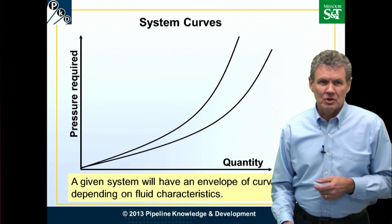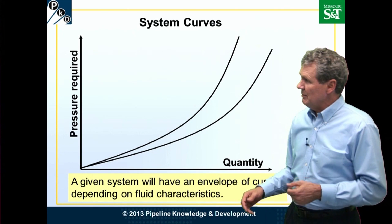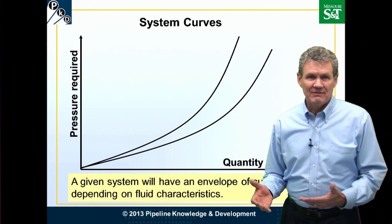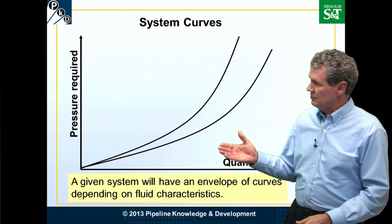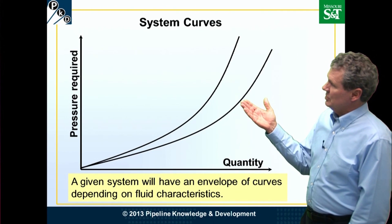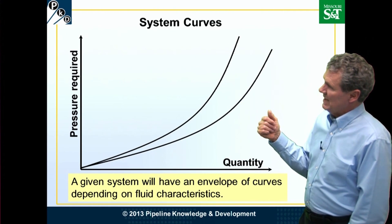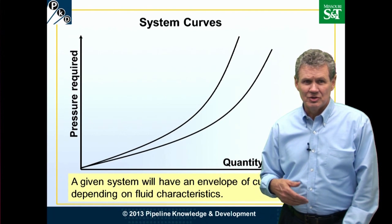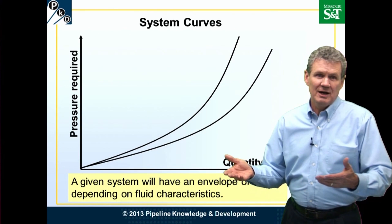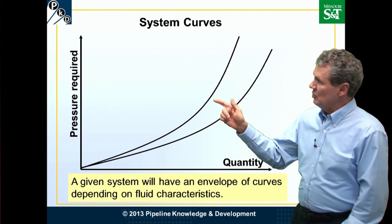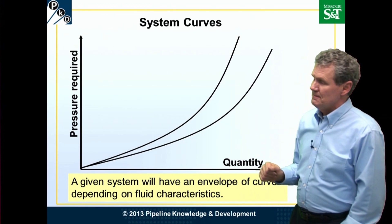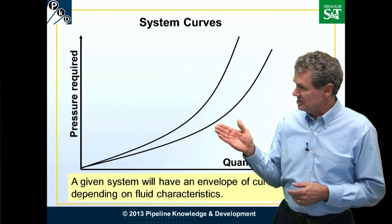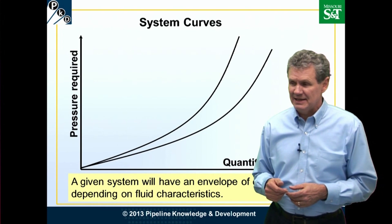Rather than talking about a single systems curve, we're probably better to talk about a family of curves. A given system is going to have an envelope of curves. The curve furthest to the right would represent the lightest, least viscous material moving on the hottest day, for example. And as we move over to the left, if we have more viscous or denser fluid, the system's curve is going to shift in that direction.